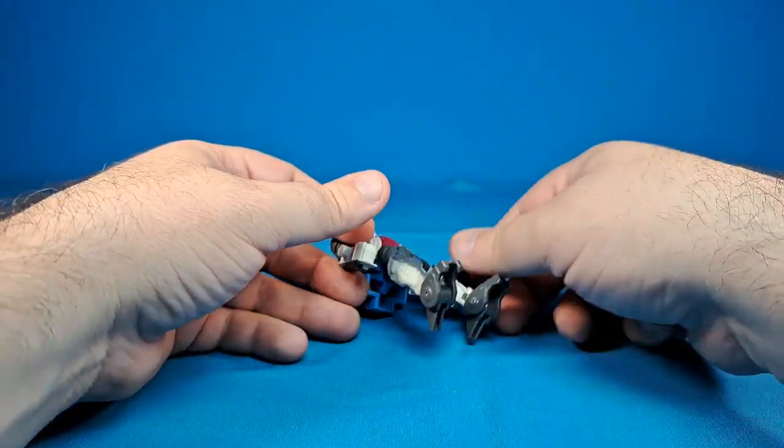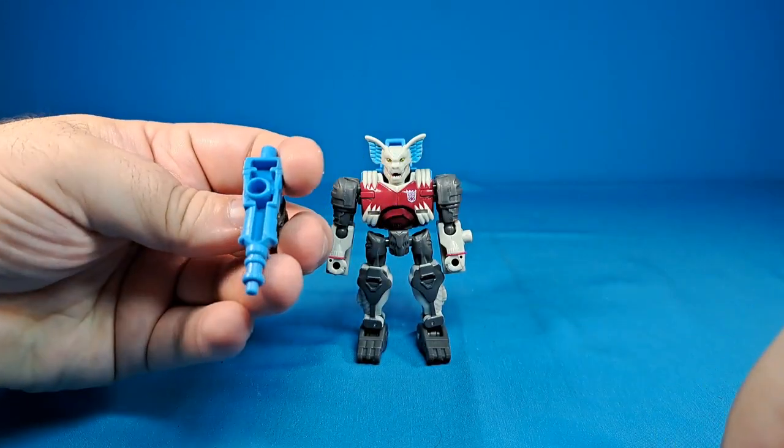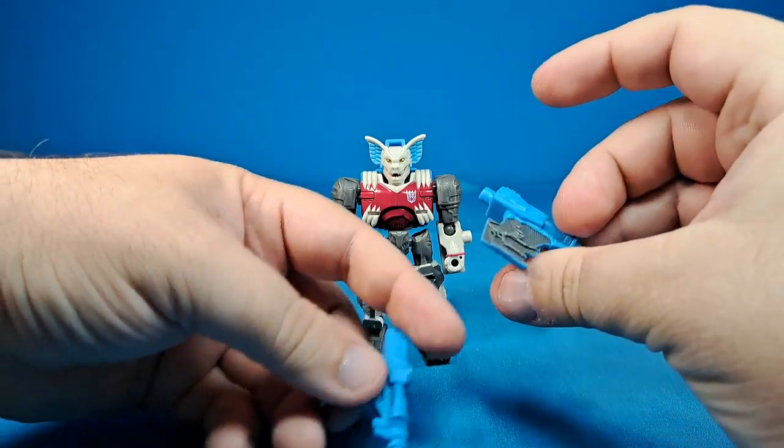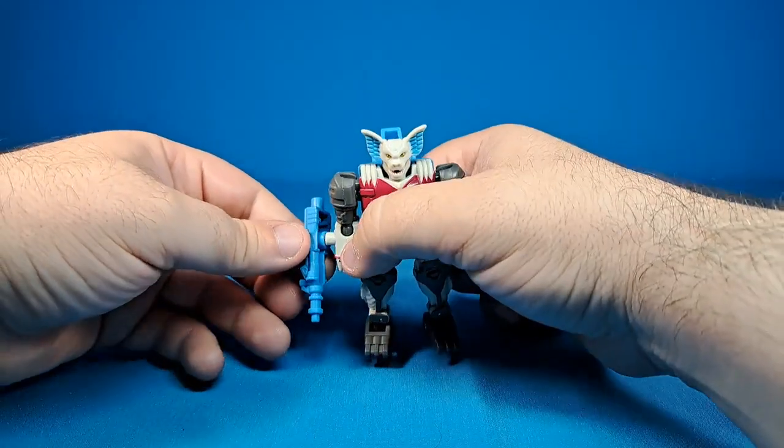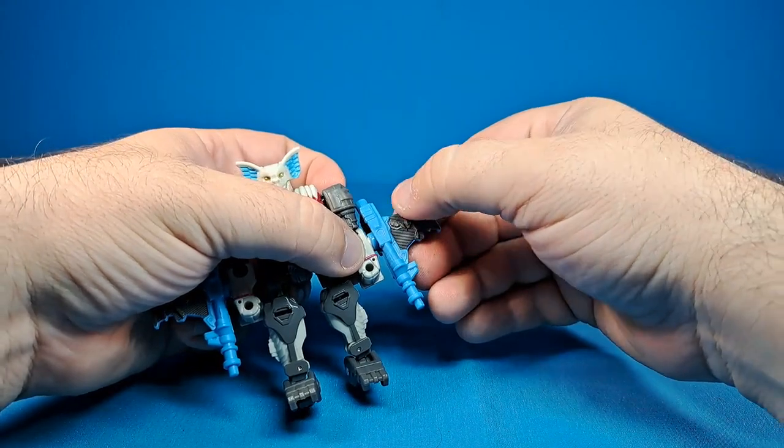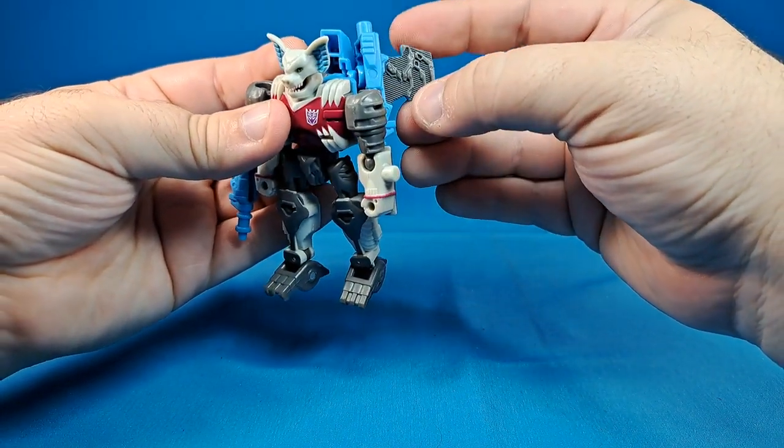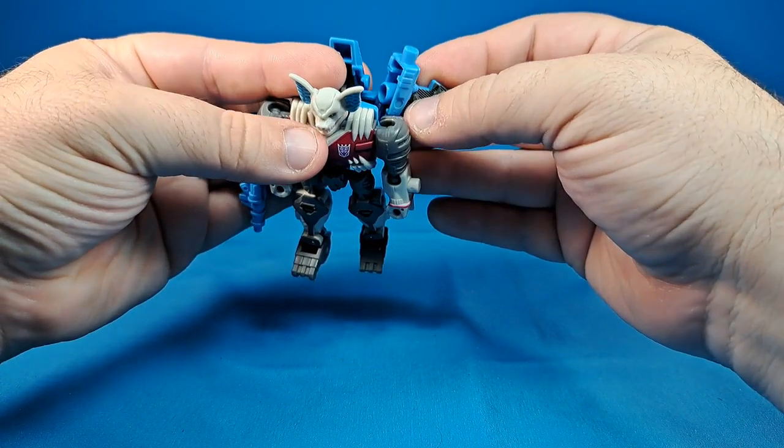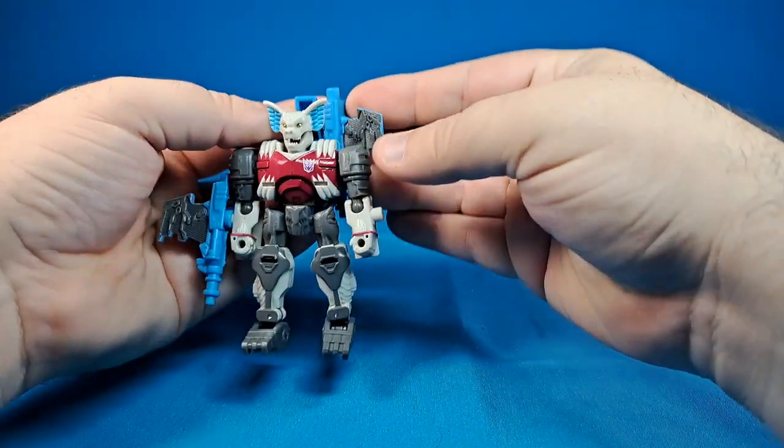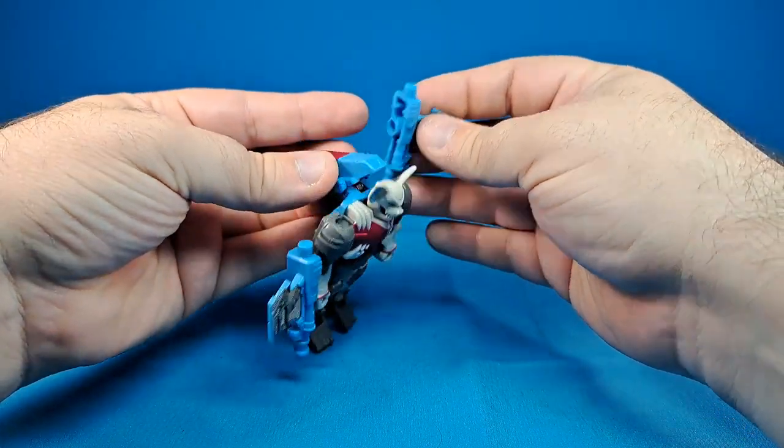In terms of accessories, he comes with two of these blaster thingamajigs. You can plug them into his forearms. I actually generally plug them into the other forearms. This one shows this little wing detail up here. I want to say that you're supposed to be able to put the wing detail so that it looks like wings behind them.